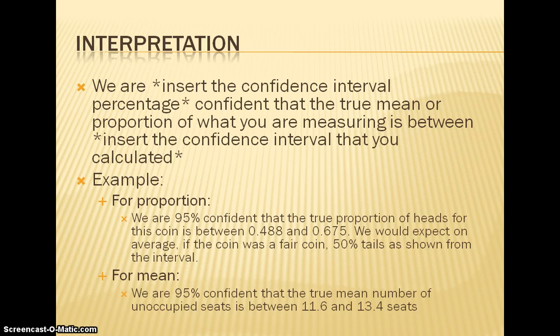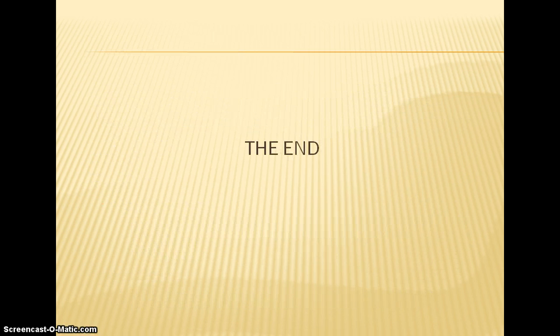For mean, we would say we are 95% confident that the true mean number of unoccupied seats is between 11.6 and 13.4 seats. That is all you need to know to find and to construct a confidence interval for means and proportions for one sample test.